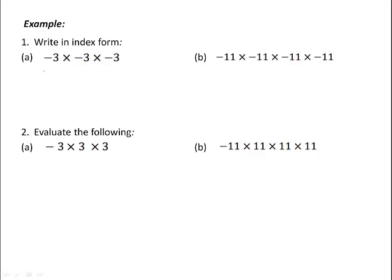Negative numbers can also be written in index form, but we must be careful to consider where the negative is. In this case, it is negative 3 times by itself 3 times, so the base is negative 3. We must use brackets and then raise it to the power of 3. Similarly, negative 11 is times by itself 4 times, so the base is negative 11, but we must have brackets before we raise it to the power of 4.